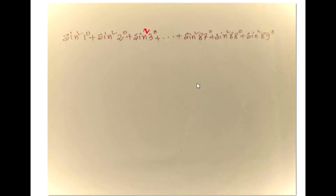Now this rule will be applicable only when there are two angles and if we add those two angles we will get 90 degrees. Here 1 degree plus 89 degree is 90 degree, 2 degree plus 88 degree is 90 degree, and 3 degree plus 87 degree is 90 degree and so on.